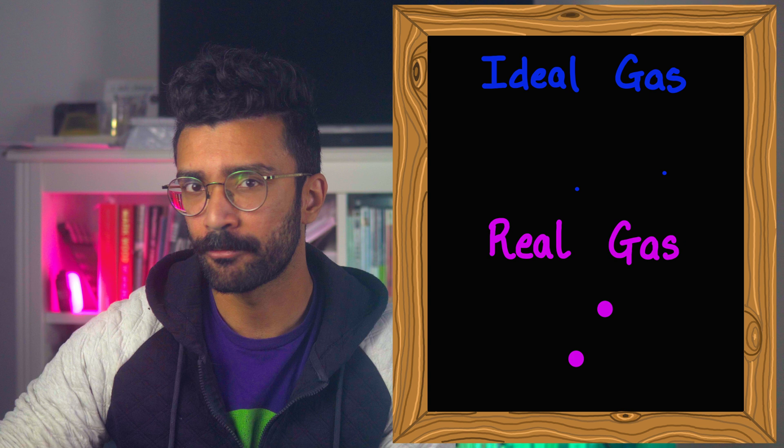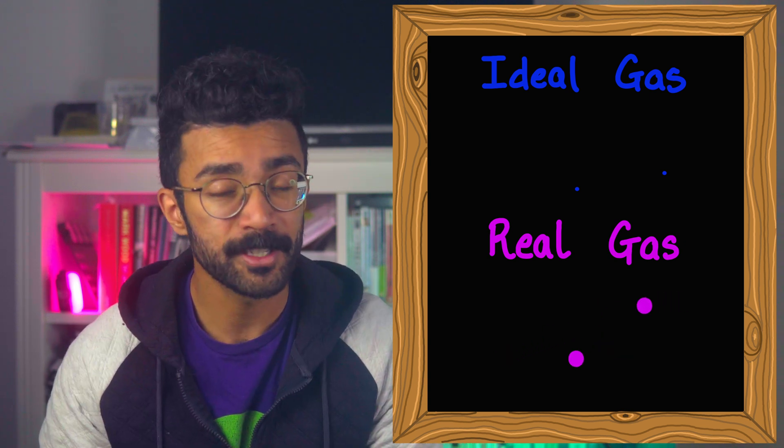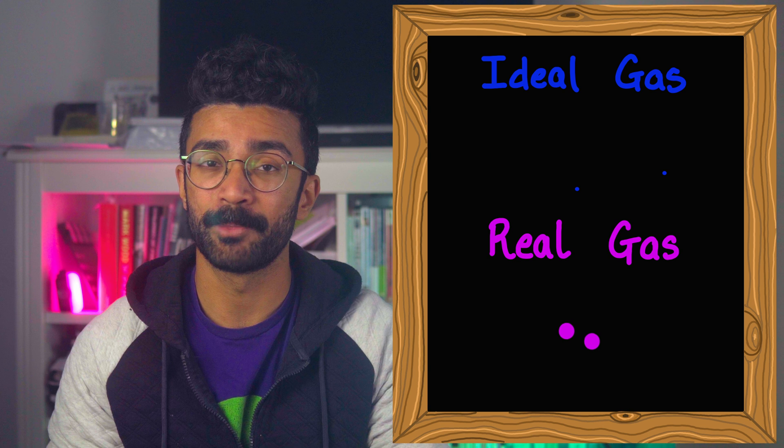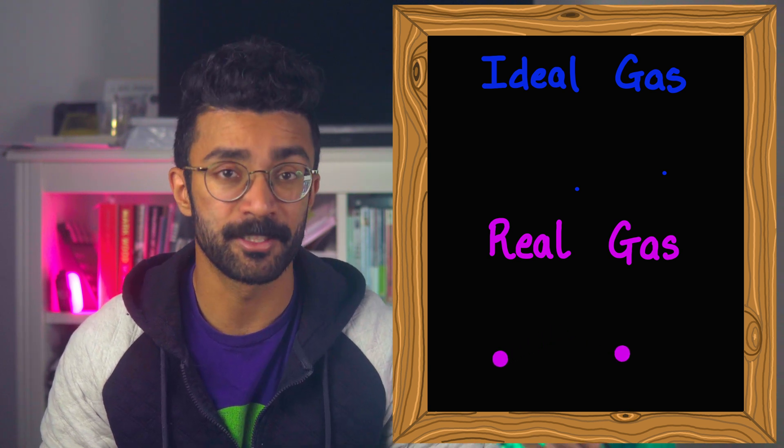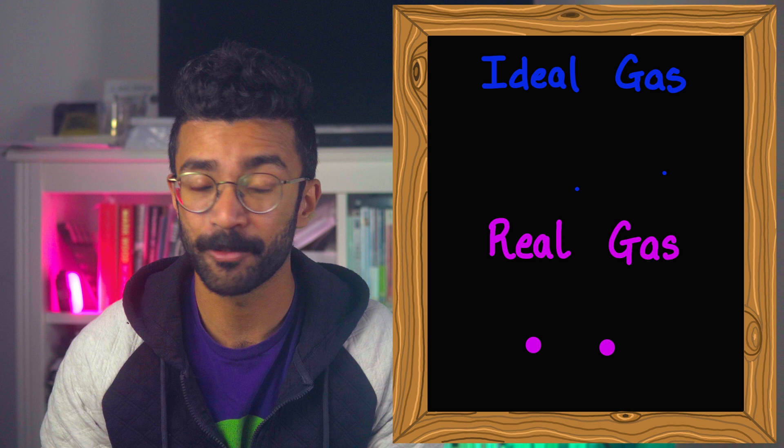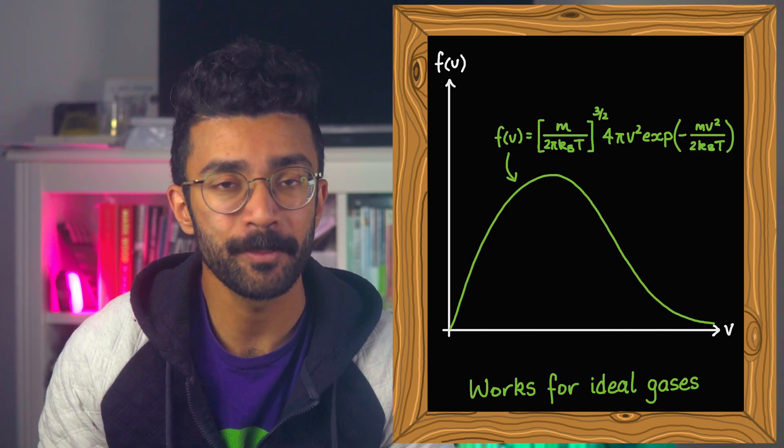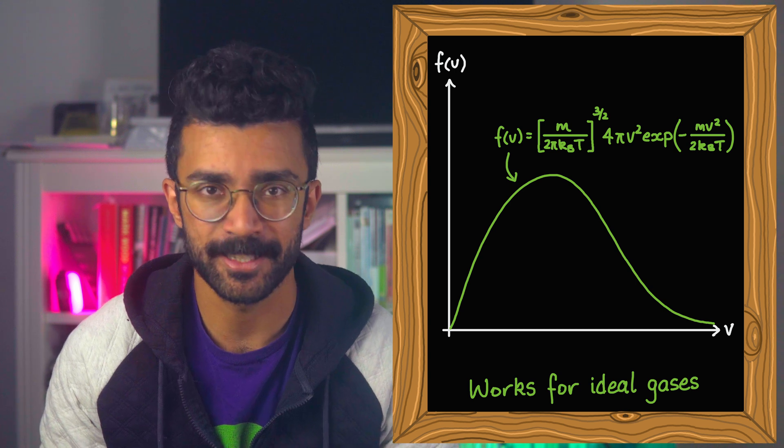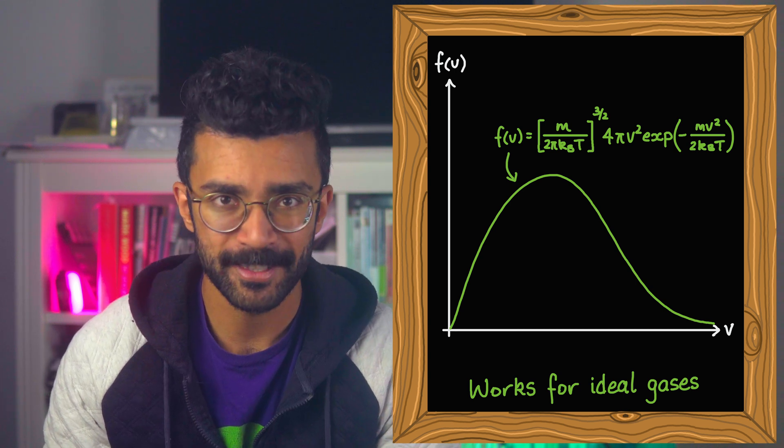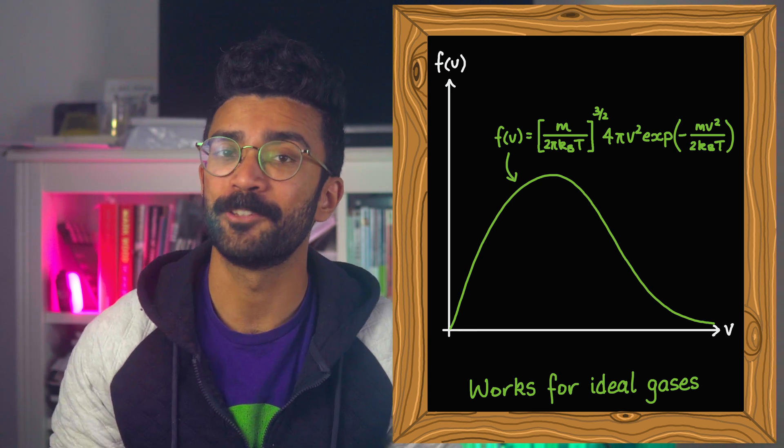However, there are some conditions where real gases behave more and more like ideal gases. And in those cases, the Maxwell-Boltzmann distribution becomes a more and more accurate description. If you'd like to learn more about that, then check out this video I made on the channel previously. I'll leave a link in the description as well if you're interested. The distribution can also be changed to represent more realistic gas particles, but that discussion is more complicated and deserves a video of its own. Let me know in the comments if you'd like to see that.